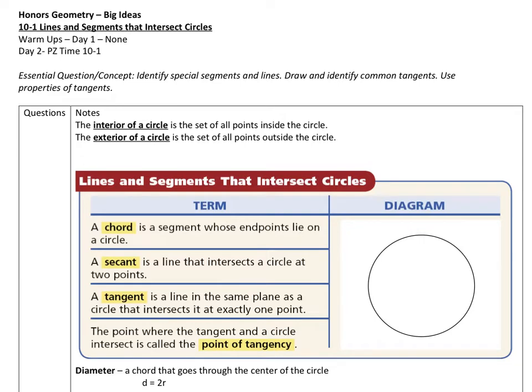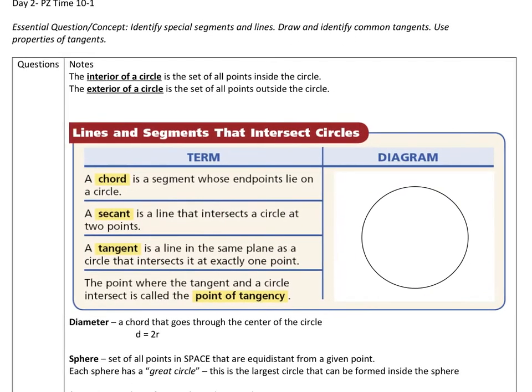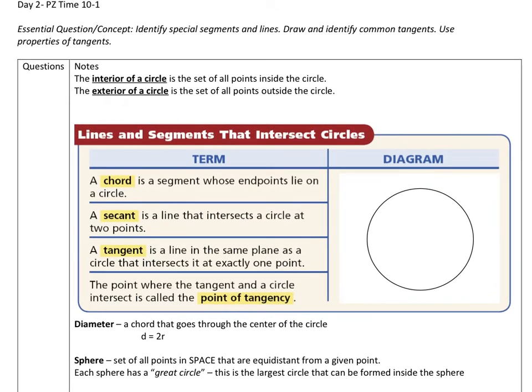And the first thing we have here is we just got to make sure we understand what the interior of a circle is and what the exterior of a circle is. The interior would be inside the circle, the exterior would be obviously outside the circle. So the interior is a set of all points on the inside of the circle, the exterior is a set of all points on the outside.